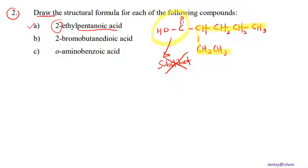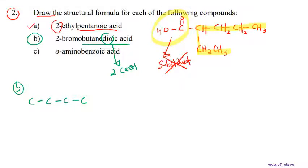Now question 2b: 2-bromobutanedioic acid. From the name, we know there are four carbons (butane), and 'dioic acid' means there are two COOH groups. You might wonder whether they sit at positions 1 and 2, 1 and 3, or 1 and 4. There is no locant number given for the dioic acid positions — both COOH groups will definitely be at both terminals, left and right.